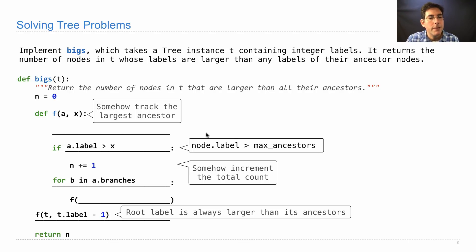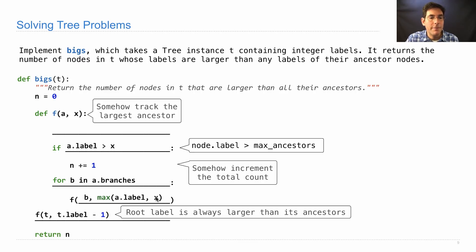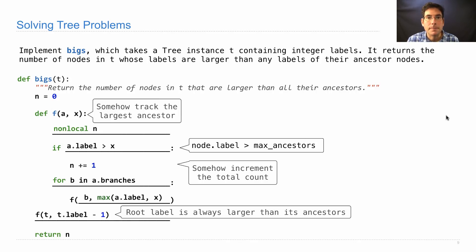And in this version, it would be very important to make a note that x is supposed to be the maximum value of any ancestor label so far, which would help me figure out how to compute that maximum value when I make the recursive call. I recurse on b and the maximum value, which is either whatever the maximum was before, or the new label if a.label is larger than x. And what's missing here is just a piece of Python syntax — a nonlocal statement to say that assignment statements within f are allowed to change n, which is in an enclosing scope.